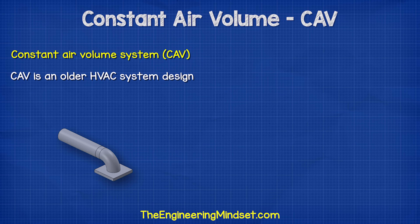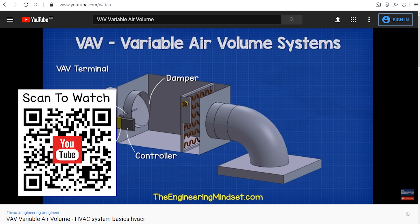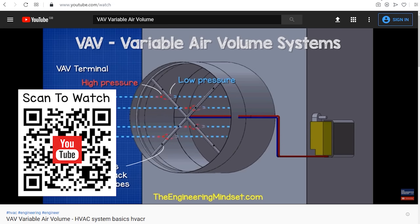CAV is an older design method. We still find this used in existing buildings, but it's less common in newer buildings because VAV systems are now the preferred choice of installation. VAV stands for Variable Air Volume. This method provides superior zone control and reduced energy consumption. We have also covered VAV systems in detail in our previous video, do check that out.